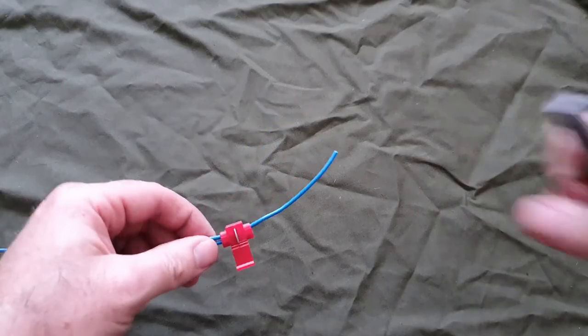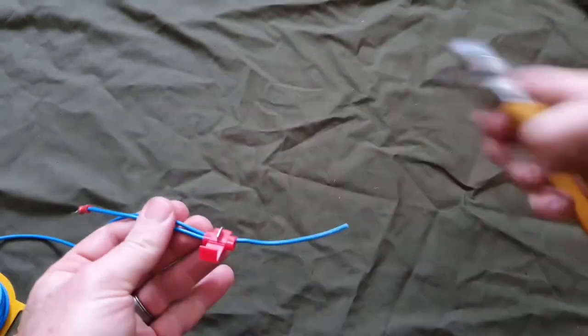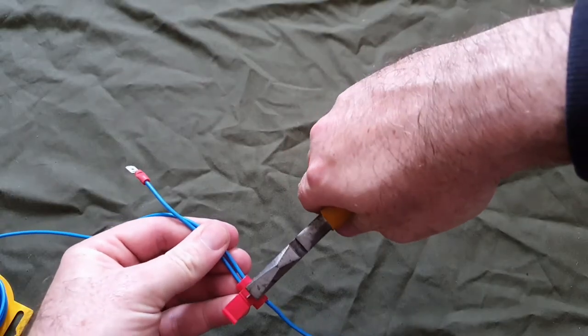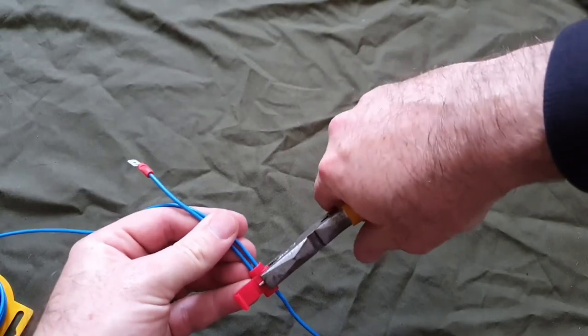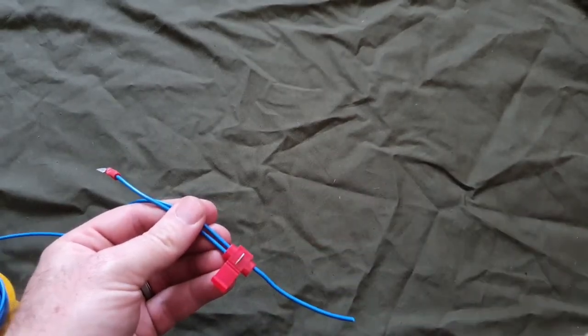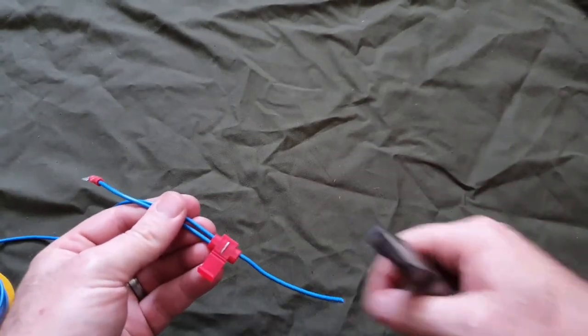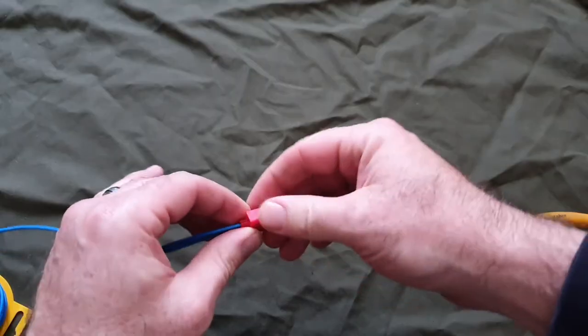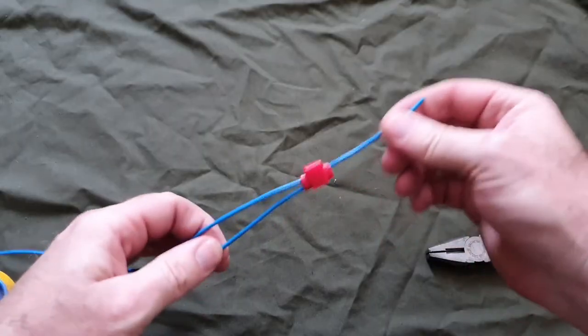With them two together, simply get a pair of pliers and squeeze down. That plate now connects both those wires together. Then to secure it, just roll that over and click. Job done.